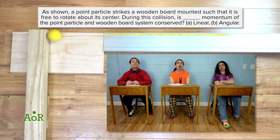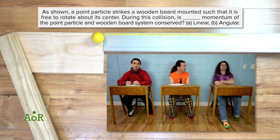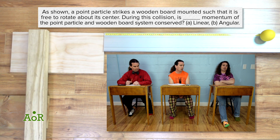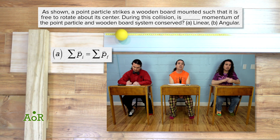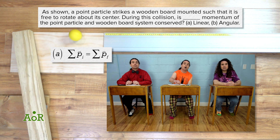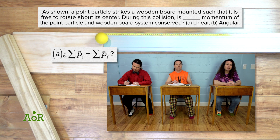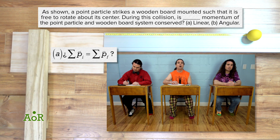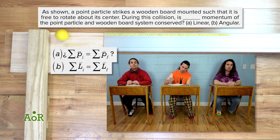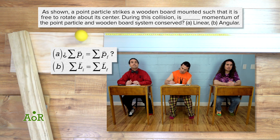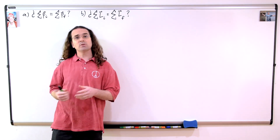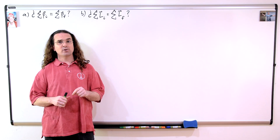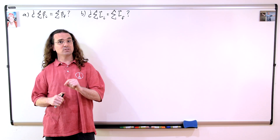There are no known values, so it is just part A: conservation of linear momentum equals question mark, or the sum of the initial linear momenta equals the sum of the final linear momenta with question marks. And part B: conservation of angular momentum equals question mark, or the sum of the initial angular momenta equals the sum of the final angular momenta with question marks. Okay, let's start with part A. Is the linear momentum of the point particle and wooden board system conserved?